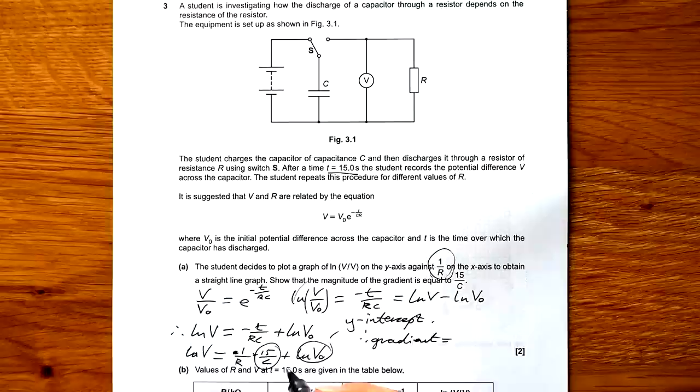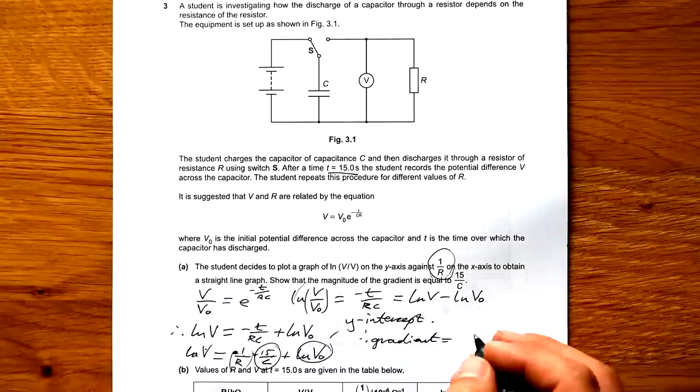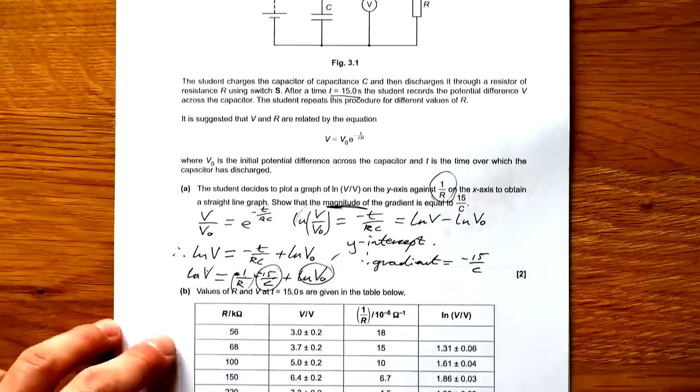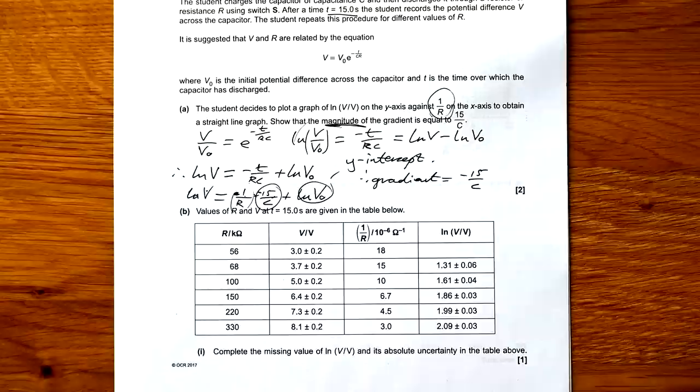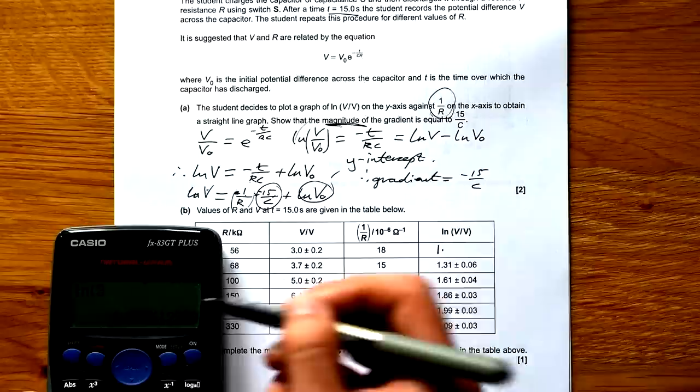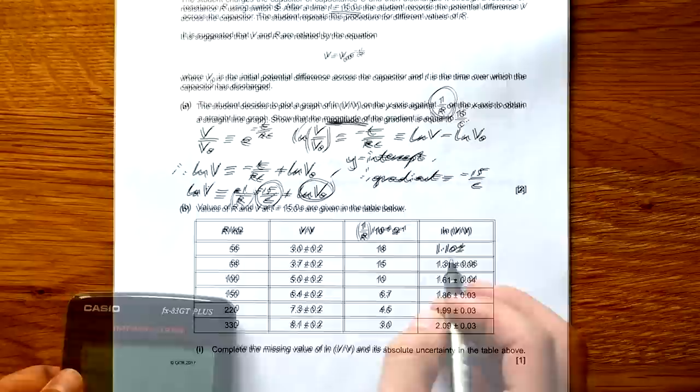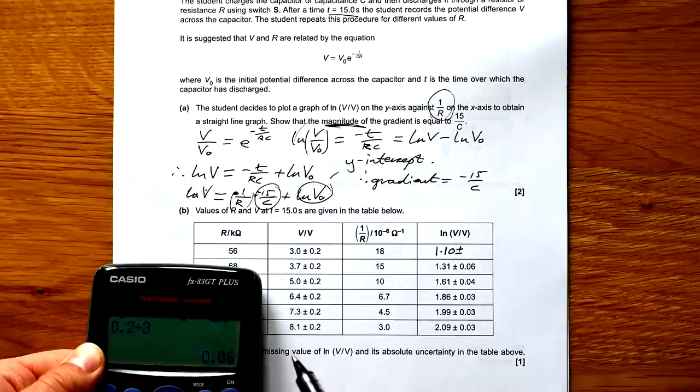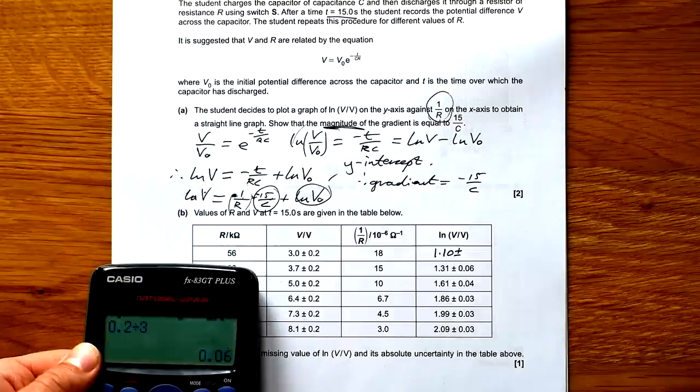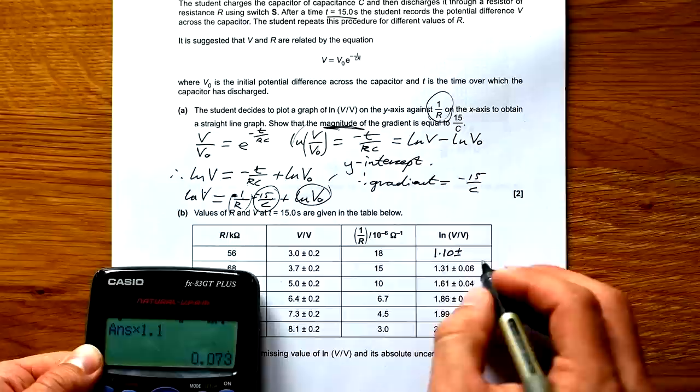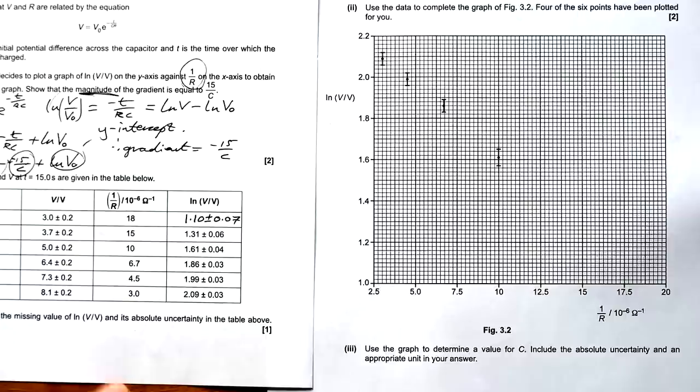Log of V0 is the y-intercept. Therefore, gradient, which is this because this is our x. So this is y equals mx plus c. Therefore, the gradient is equal to minus 15 over C. We are just looking for the magnitude. So it doesn't matter that it's a minus. Values of R and V at 15 seconds are given in the table below. Complete the missing value of log V and its absolute uncertainty in the table above. So log of V gives us 1.098, but we have to round that to three sig figs. So that's going to be 1.1, but we have to put the zero in there as well. Plus or minus - how do we get the uncertainty? So we have to get the percentage uncertainty. So that's 0.2 divided by 3. That's 7%. But then we need to multiply by our value to turn it back into an absolute uncertainty. And that gives us 0.07.